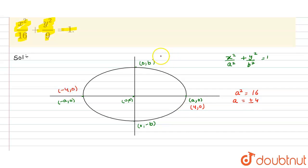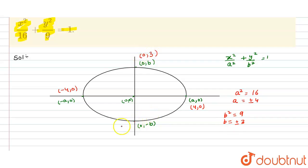Now we have to find the b points. For b we get b² is equal to 9, so b is equal to ±3. That means we get the points (0, 3) and (0, −3).